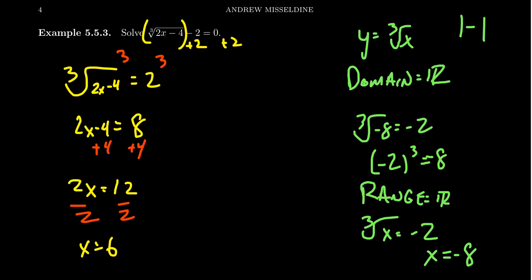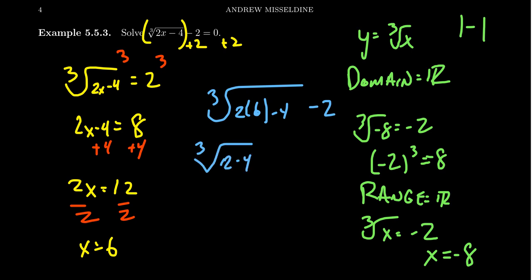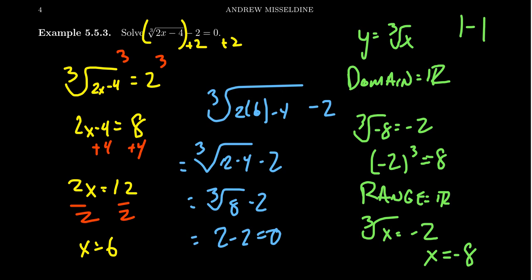We can double-check: take the cube root of two times six minus four, then subtract two. Two times six is 12; 12 minus four is eight; the cube root of eight is two; and two minus two is zero. The left-hand side agrees with the right-hand side, so we have a solution. When working with odd radicals, there are really no difficulties — the domain is all real numbers, the range is all real numbers, and the function is one-to-one.